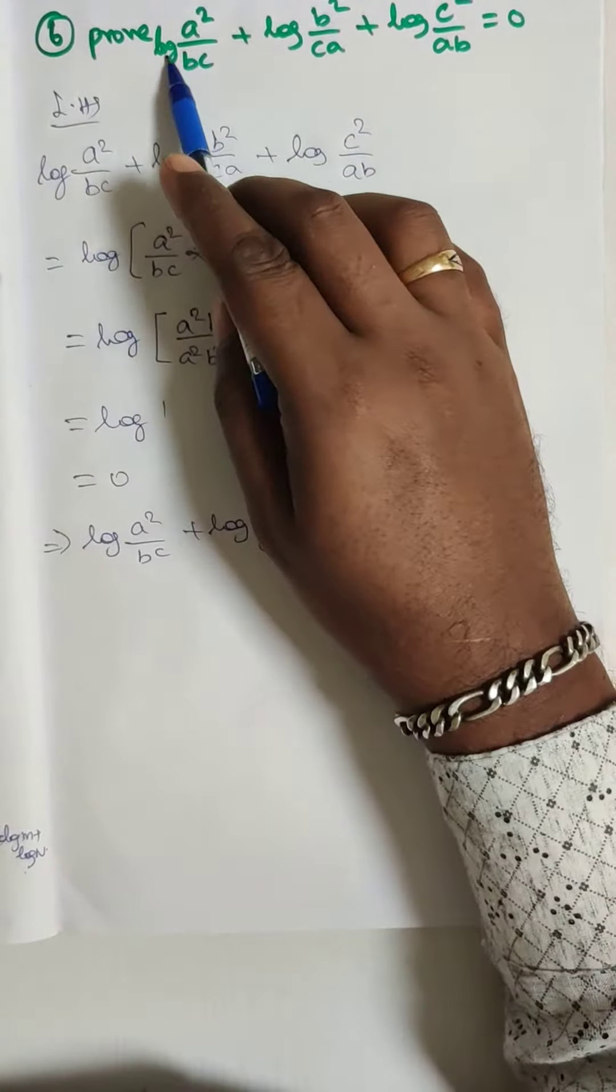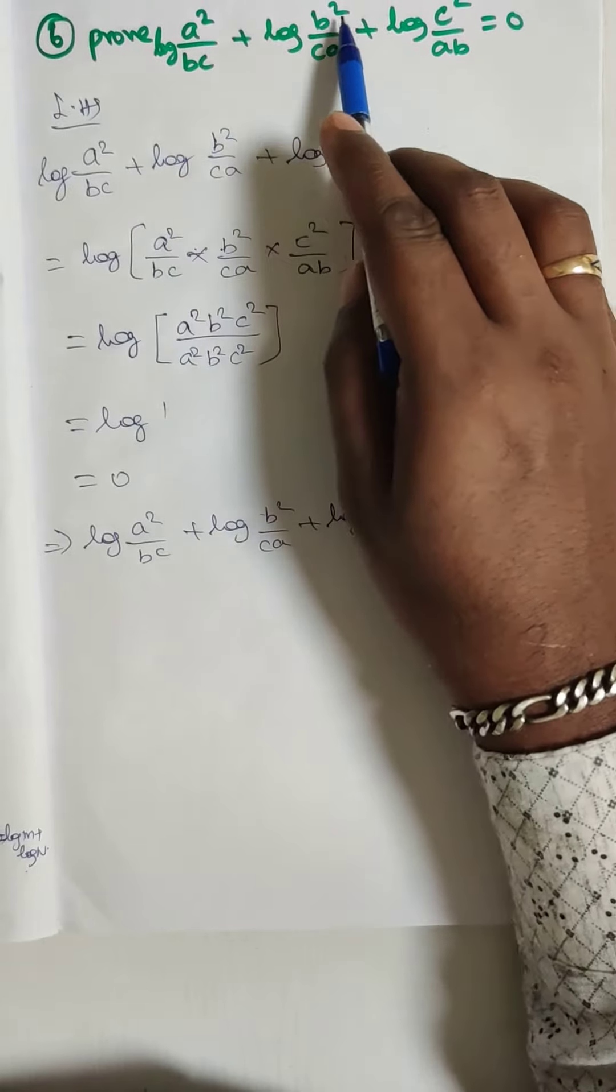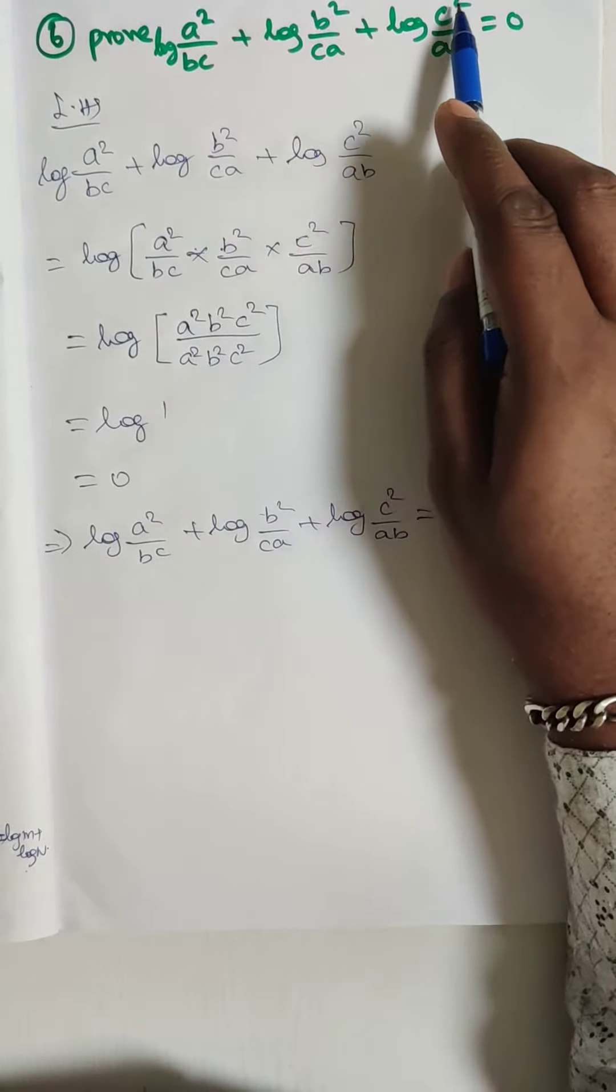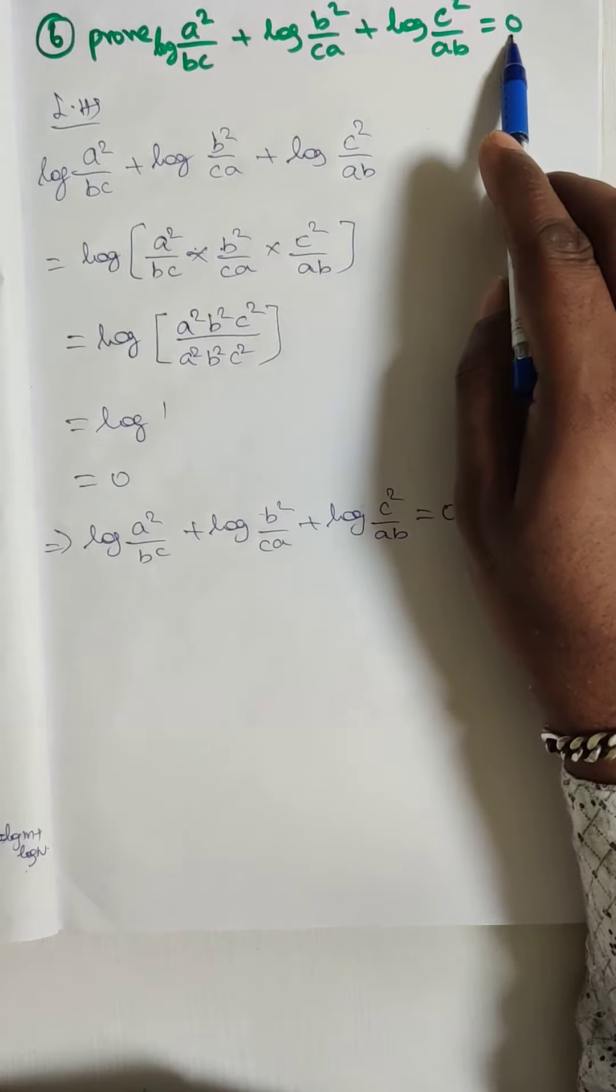Prove log a square by bc plus log b square by ca plus log c square by ab is equal to what? Zero.